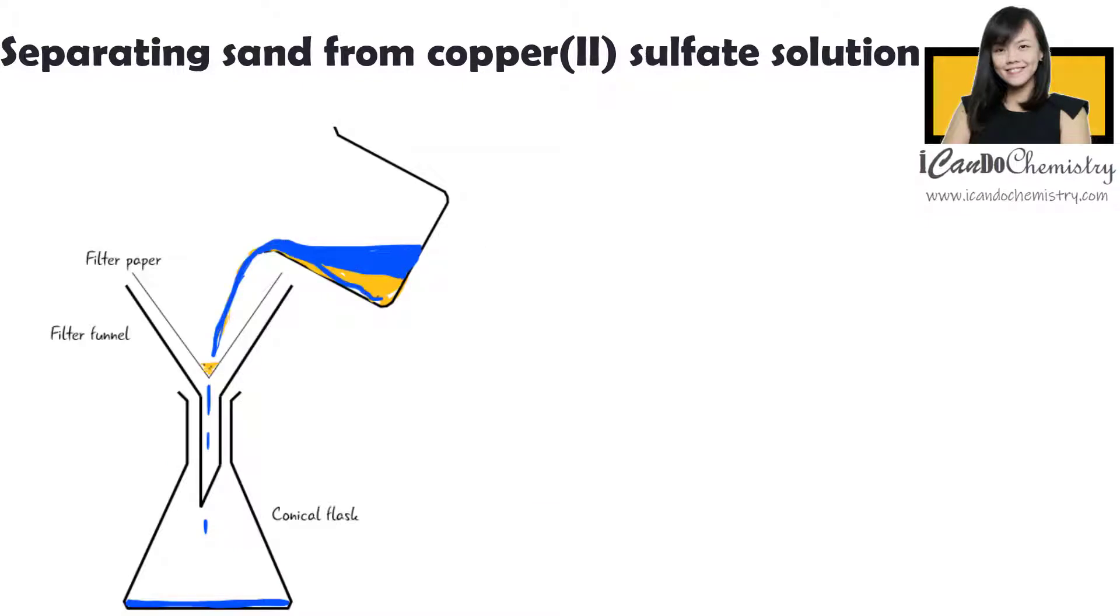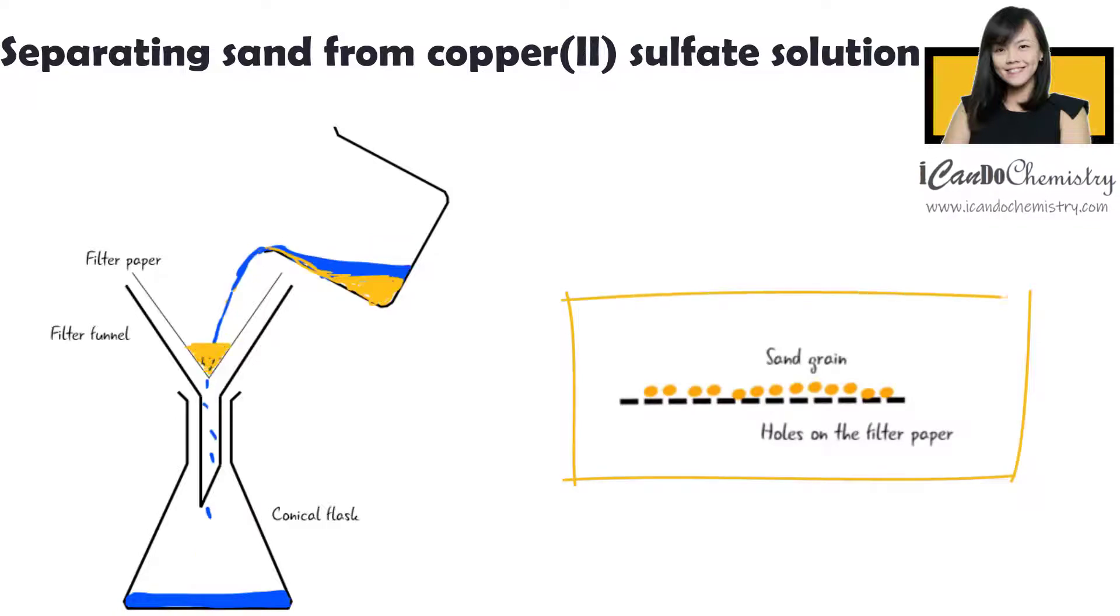We can first start by carrying out filtration to separate the sand from copper-2-sulfate solution. We will pour the mixture through the filter paper. There are small pores on the filter paper.